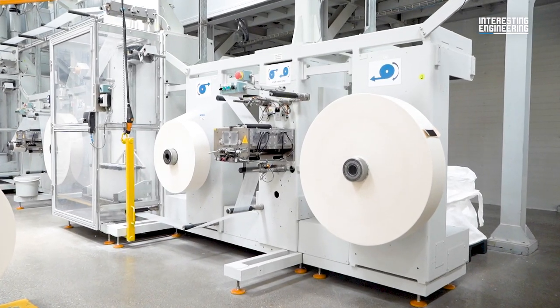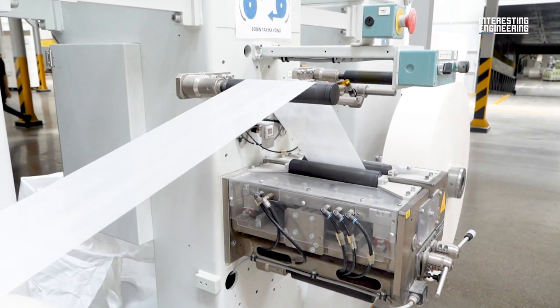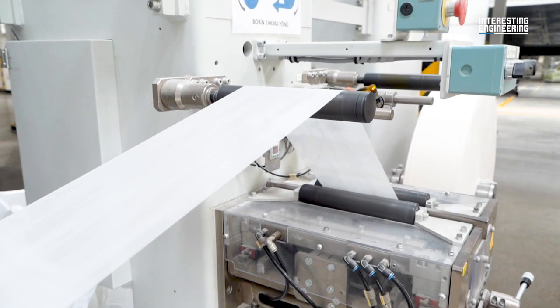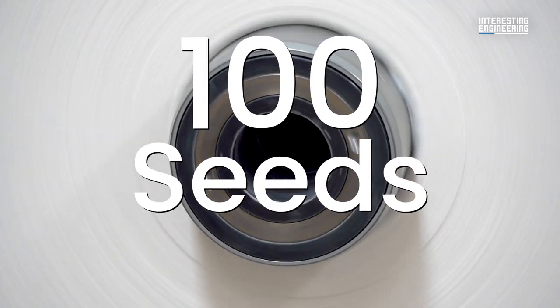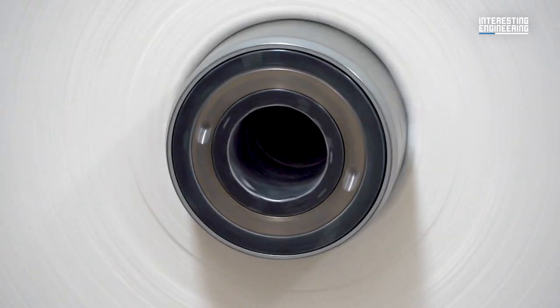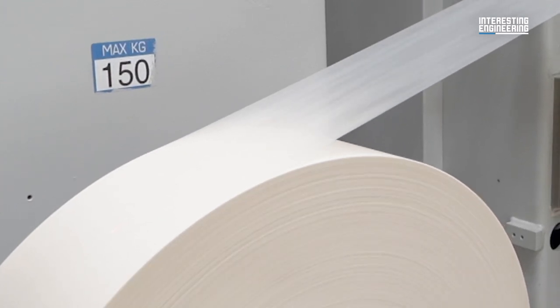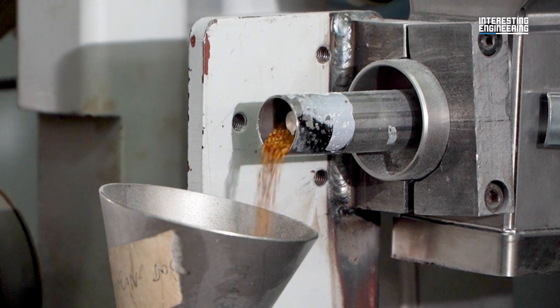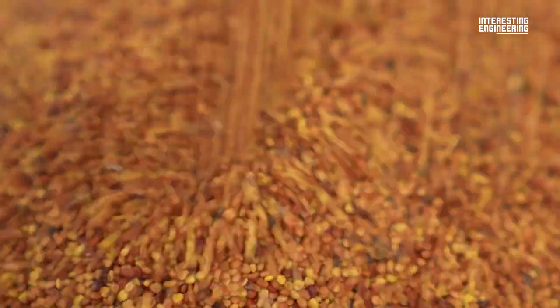A company created a sustainable and decomposable diaper. Each diaper they produce has about 100 seeds in its absorbent layer, so when a diaper is used and thrown out, these seeds can sprout and return to nature when they meet the soil.